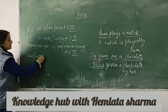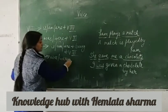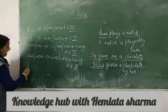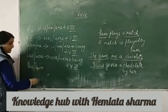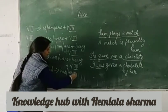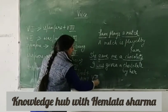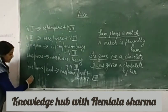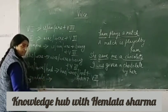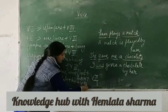Was/were changes into was/were plus being plus verb in third form. Has/have and had change into has/have/had plus been plus verb in third form. Again, modals — you're already aware of modal auxiliaries — they change into modal plus be plus verb in third form.